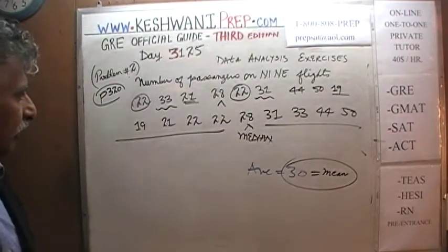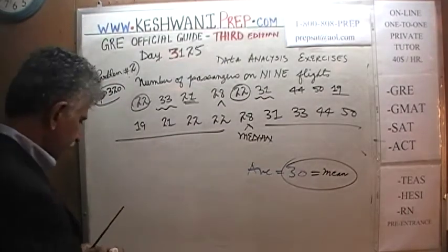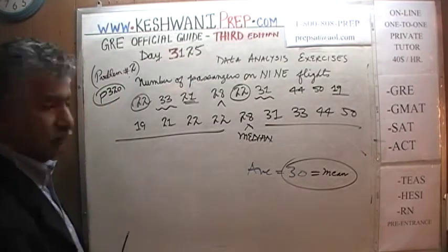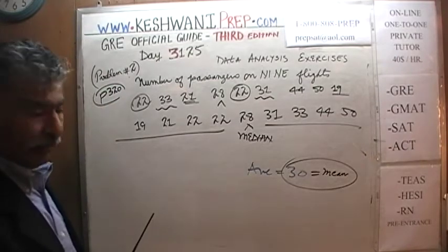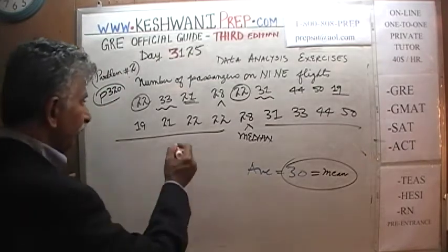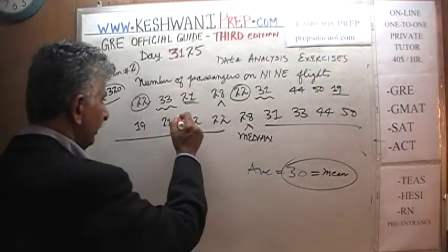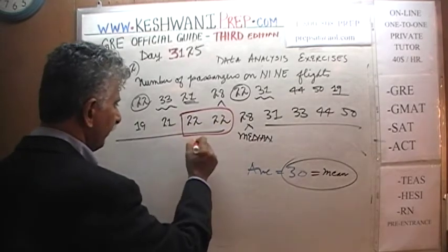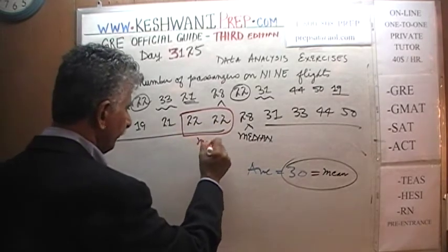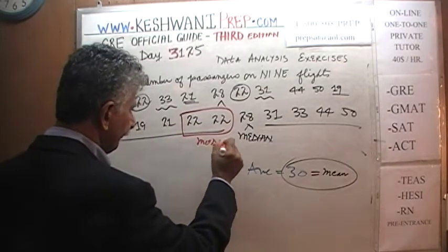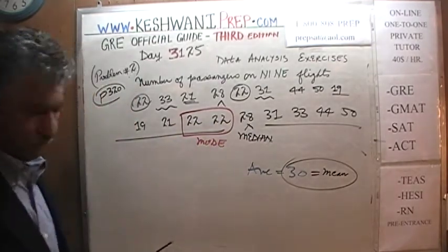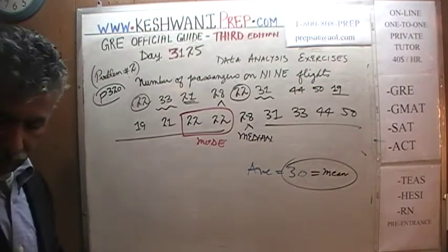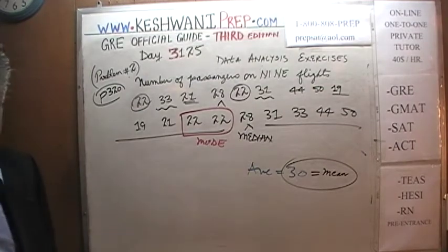What about the mode? The mode is also very easy, because we only see one value that is repeated — 22 appears two times, and that's our mode. The mean, median, and mode were very simple and straightforward.